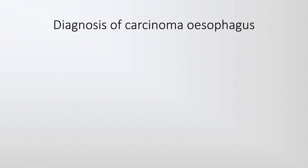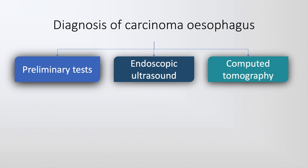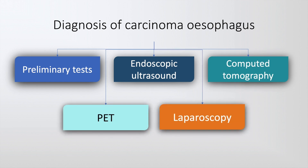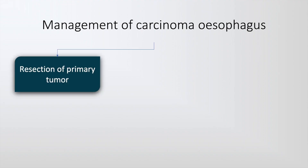The diagnosis of carcinoma esophagus may begin with preliminary tests which include a complete hemogram, renal and liver function, upper GI endoscopy and a biopsy. Additionally, we can also do endoscopic ultrasound, computed tomography, a PET scan, and laparoscopy.